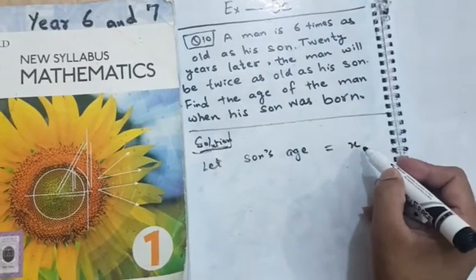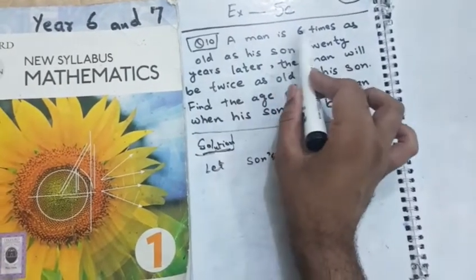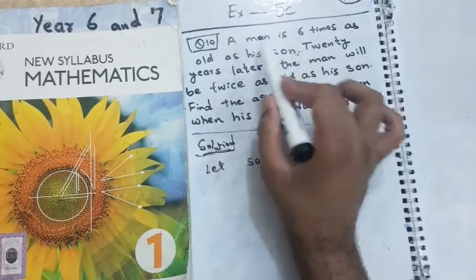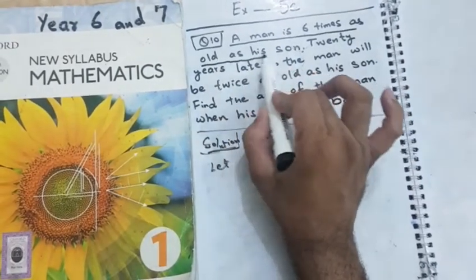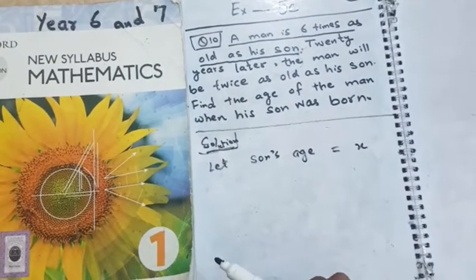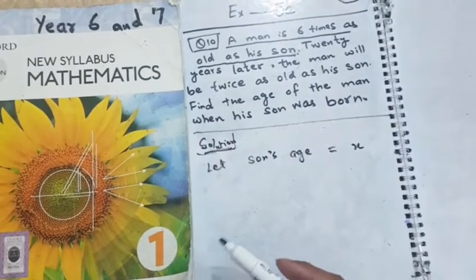If the son's age is x, then according to statement, a man is six times as old as his son. Just I have read first half, one and a half line. A man is six times as old as his son.